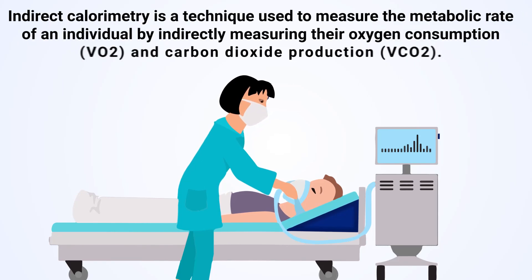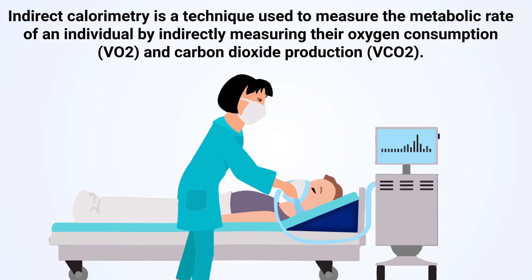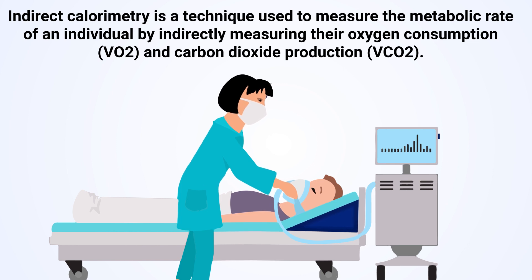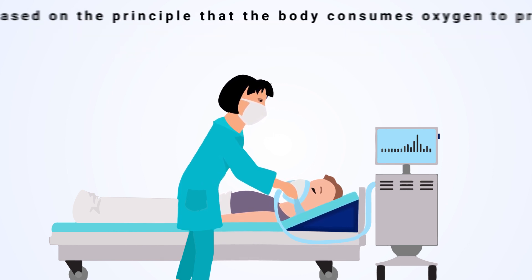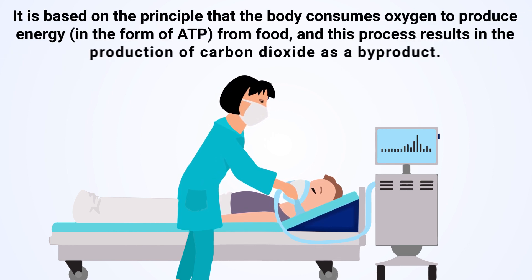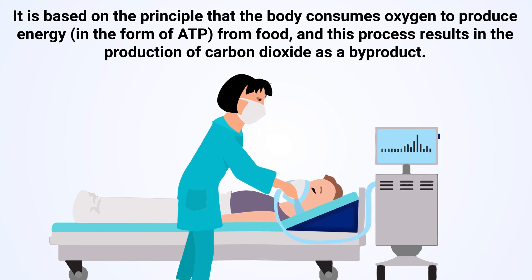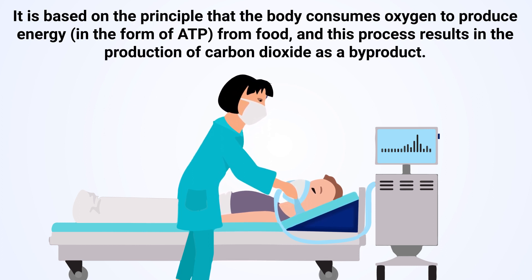Indirect calorimetry is a technique used to measure the metabolic rate of an individual by indirectly measuring their oxygen consumption and carbon dioxide production. It is based on the principle that the body consumes oxygen to produce energy.